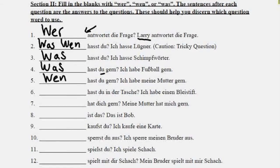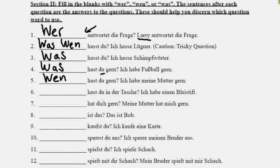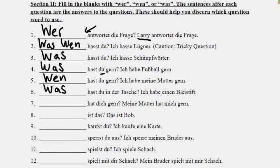For those of you who are George Thorogood fans, you can now correct his grammar when he says 'Who do you love?' — it should be 'whom,' Mr. Thorogood. Number six: blank hast du in der Tasche? — Blank do you have in the bag? Let's assume we're never going to put people in a bag, so the answer is Ich habe einen Bleistift — I have a pencil. A pencil is a thing, so we say was. What do you have in the bag?